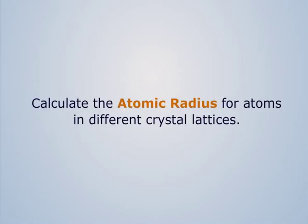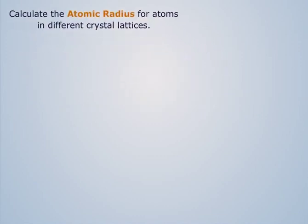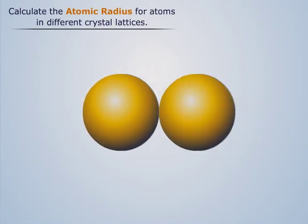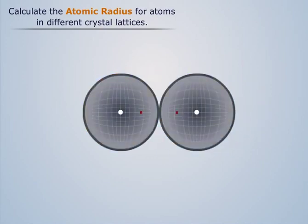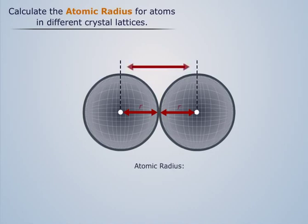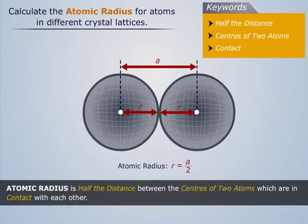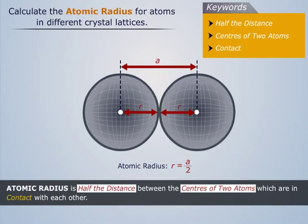We will calculate the atomic radius for atoms in different crystal lattices. Let's consider an atom to be a perfect sphere. If we place two such identical atoms in contact with each other, their atomic radii will be half the distance between their centers. Thus we can define atomic radius as half the distance between the centers of two atoms which are in contact with each other.